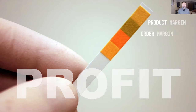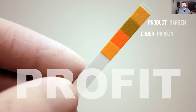The second element we're going to get into is what we call the order margin. The order margin looks at the cost of just doing business for your orders — things like payment processing, pick and pack and shipping costs, returns, discounts, and what it costs to run your e-commerce platform to maintain the business day-to-day. Those are all costs we look at in the order margin formula.